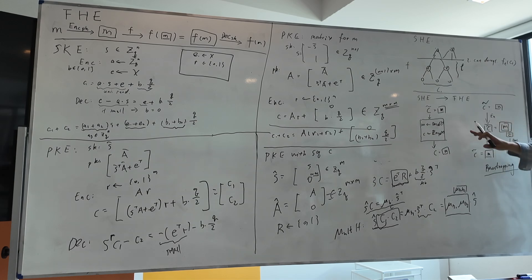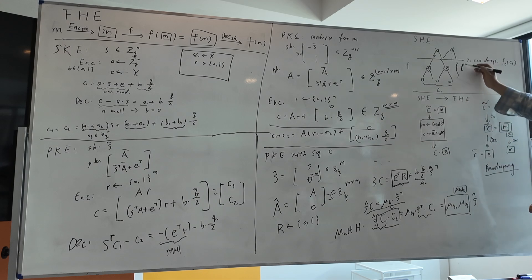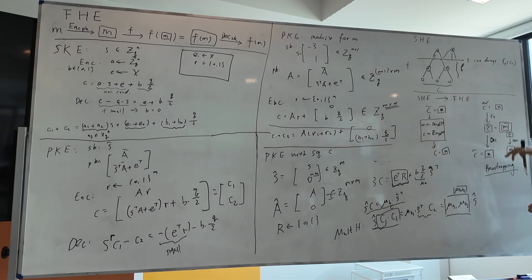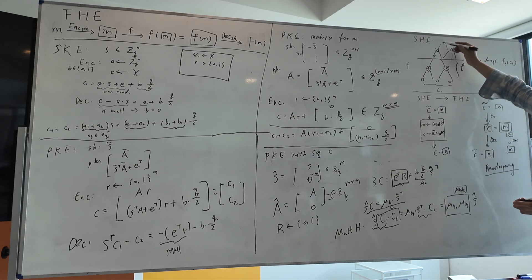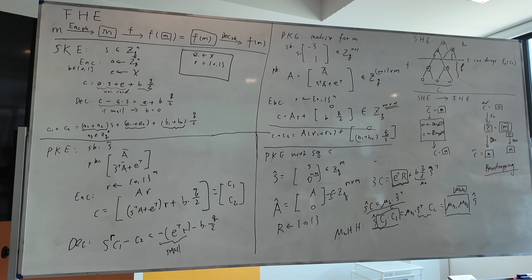All intermediate results during bootstrapping are ciphertexts and don't leak anything about the message M. The way to go from somewhat HE to fully homomorphic encryption is to apply some operations, then do a bootstrapping, then keep doing operations, and after noise grows large, apply bootstrapping again — interleaving bootstrapping and operations to get a fully homomorphic encryption scheme. That's all, thank you.